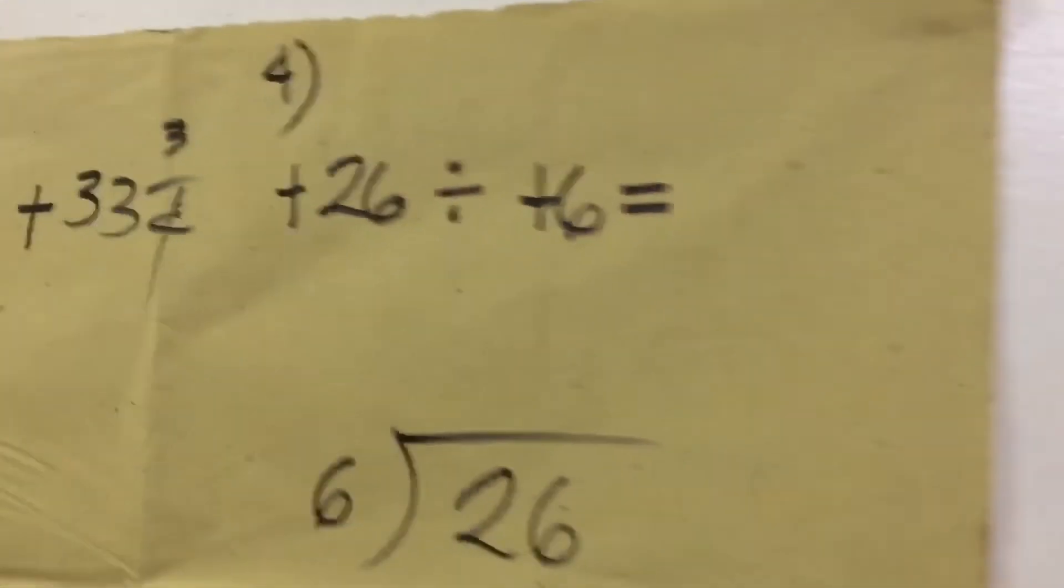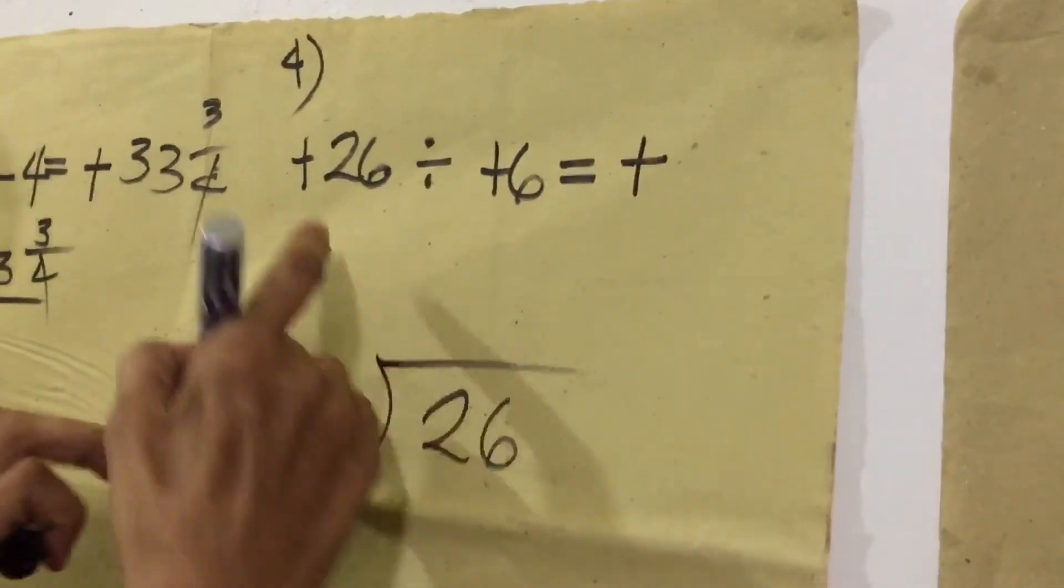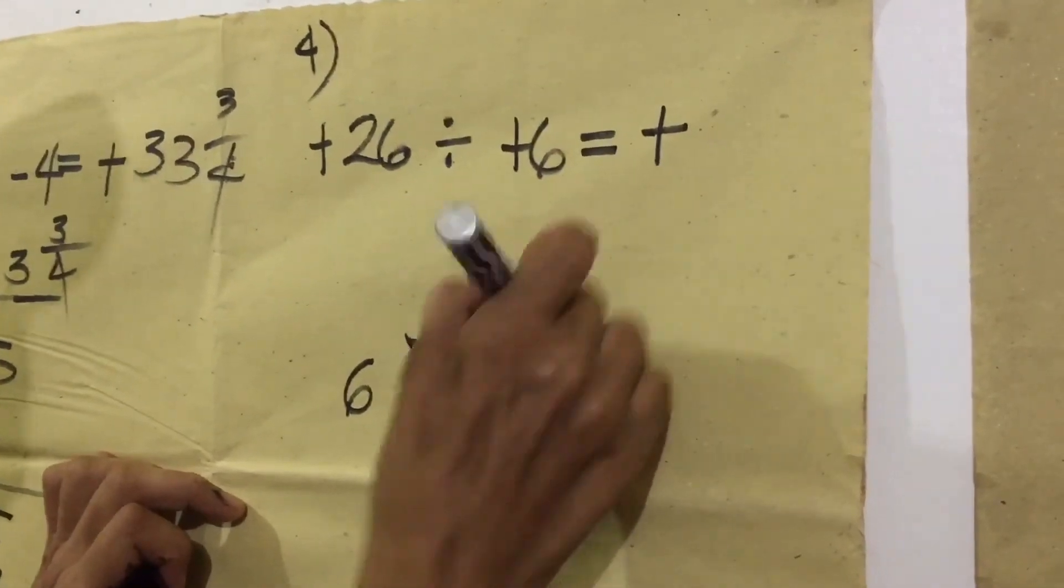Number 4. Positive divided positive. Our answer is positive. Then, 26 divided by 6. My estimate is 4.